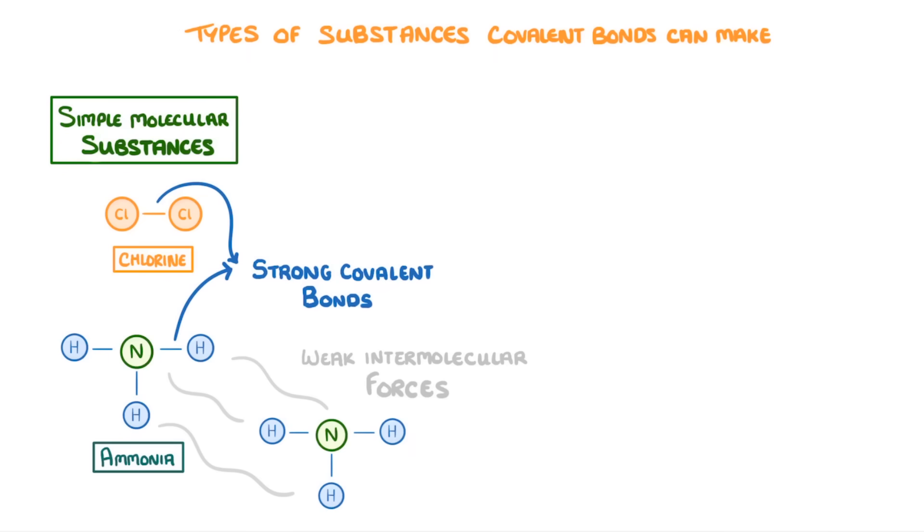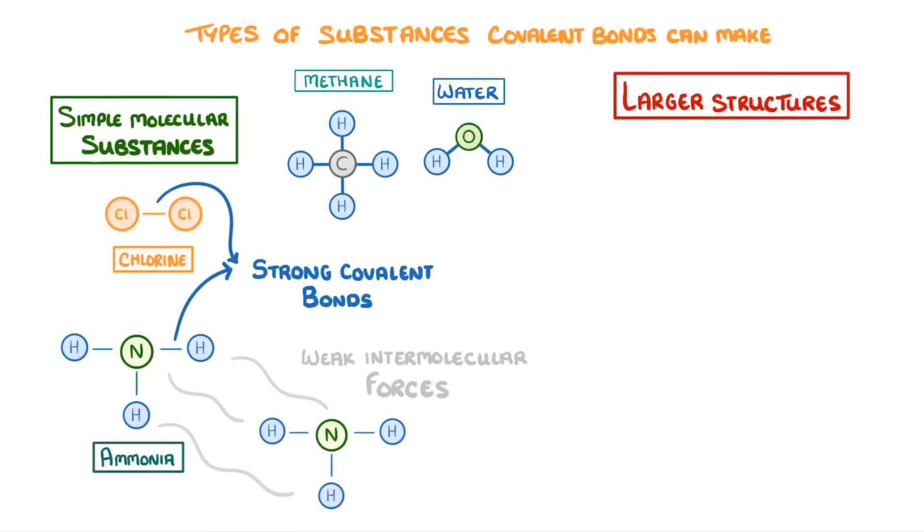Other simple molecular substances worth knowing are water, which is H2O, and methane, which is CH4. Covalent bonds can also be used to make much larger structures though, such as polymers, and giant covalent structures.